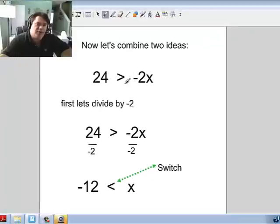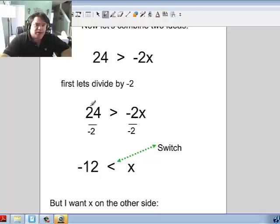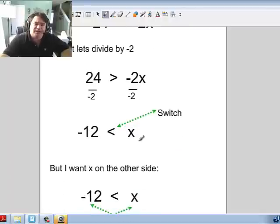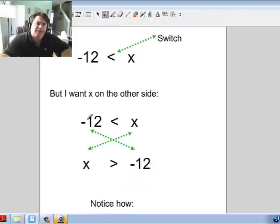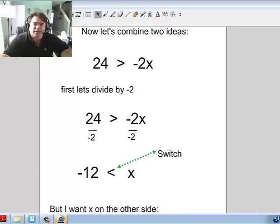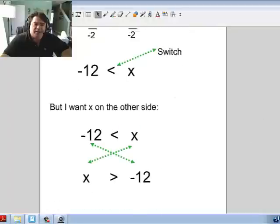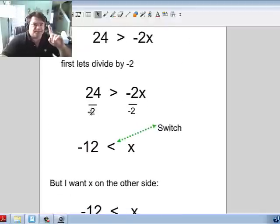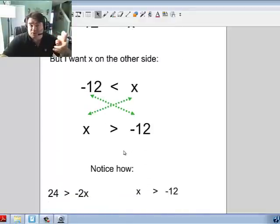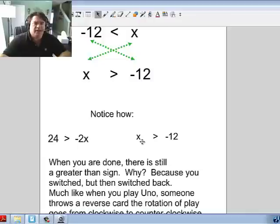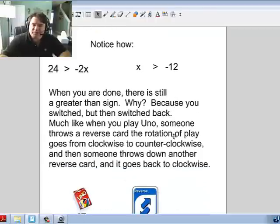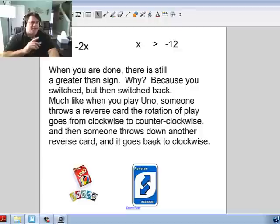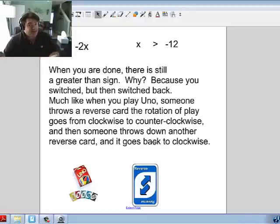Let's combine the two ideas now. So we have 24 > -2x. So first I'm going to divide by -2. Well, alright. I go ahead and divide by -2 to both sides. Sweet. So I get -12. This becomes normal x. This has to switch. But now I want x on the other side. So here's what you do. You take x and flip to this side. That means this has to flip to this side. And the sign flips once again. Now, notice how you went from a greater than to a less than back to a greater than. Why? Well, you had a negative x. So you had to switch once. If x was on the wrong side, you switched the sign twice. So it is possible to switch it back to its original. Notice how 24 > -2x. x > -12. When you are done, there is still a greater sign. We just talked about that. But much like when you play Uno, like I'm saying here, if the deck is going this way, you hit a reverse card, boom, it goes this way. But if you hit another reverse card, boom, it goes back into the original direction. So two reverse cards mean the original direction, just like two negatives make a positive. Two sign switches make the original sign.